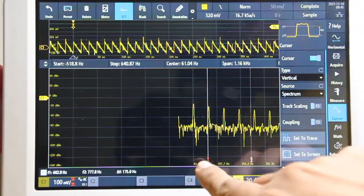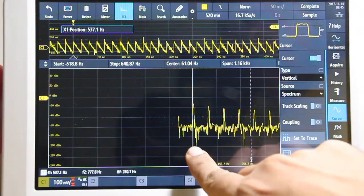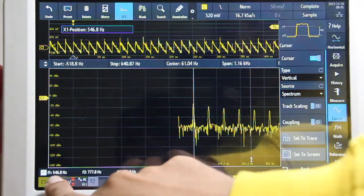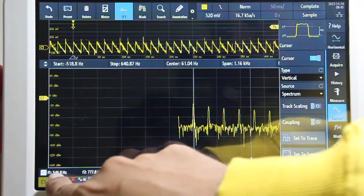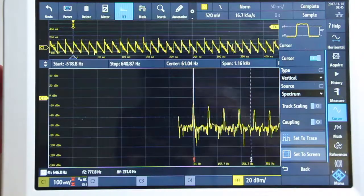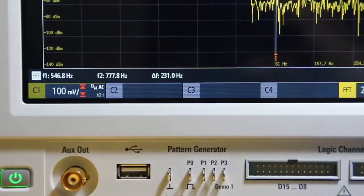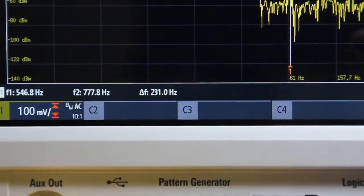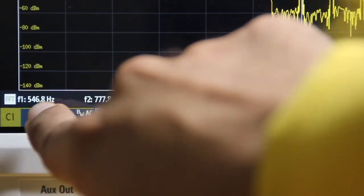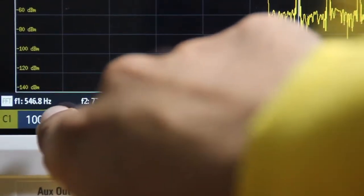So put cursor one right about here. It says F1 is 546 Hertz. No, no. Take a look at this, so cursor one is at 60 Hertz but this thing says cursor one is at 560 Hertz. If I move this around, that's wrong. So big problem.